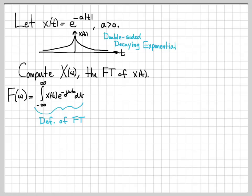The Fourier transform is an integral from minus infinity to infinity of x(t) · e^(-jωt) dt. For this specific problem, our x(t) is e^(-a|t|), so we plug that in. Now this is where it gets a little tricky mathematically, because we need to be able to deal with the absolute value sign.